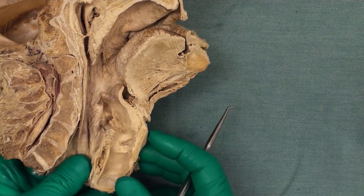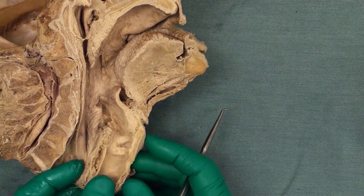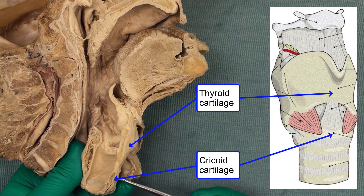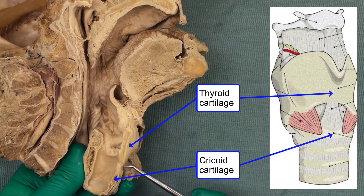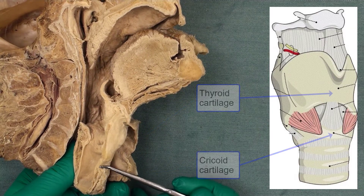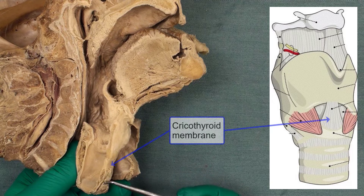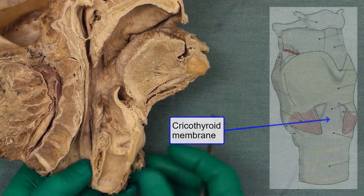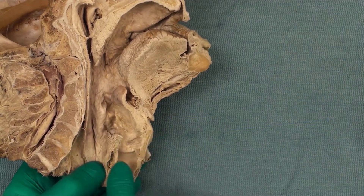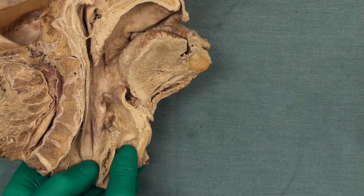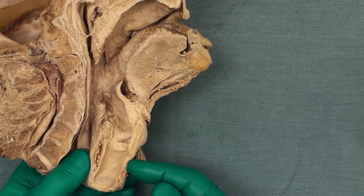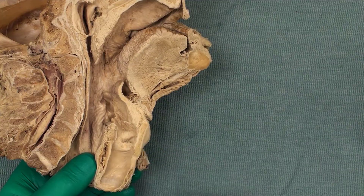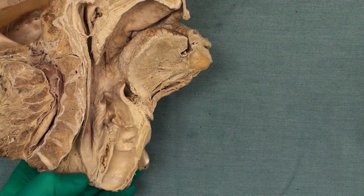The area between these two folds is known as the laryngeal ventricle. Between the thyroid cartilage and cricoid cartilage there is a membrane called the cricothyroid membrane. In the next shot we want to see the larynx from the posterior view and examine the relationship between this membrane and the inside of the larynx.